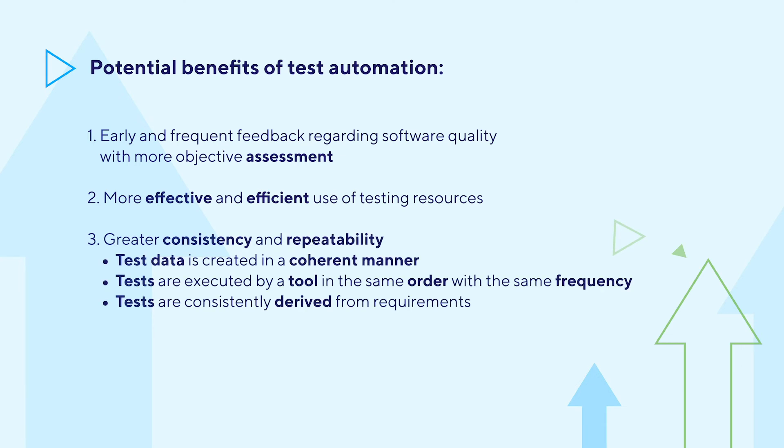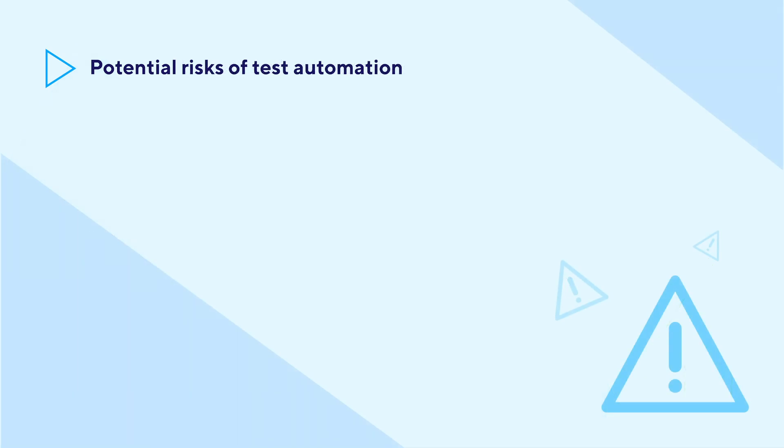Last but not least, test automation enhances consistency and repeatability, as tests are executed by tools in the same order and at the same frequency. For instance, you may apply nightly builds to run regression testing or sanity testing on staging or production. Do keep in mind that a successful plan lies in how software development teams utilize test automation to maximize productivity and mitigate risks.